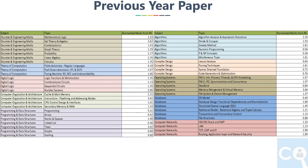By analyzing the last 27 years of previous year papers, we arrived at normalized marks out of 85 marks for each topic. For details on how we derived this analysis, you can refer to my old videos.